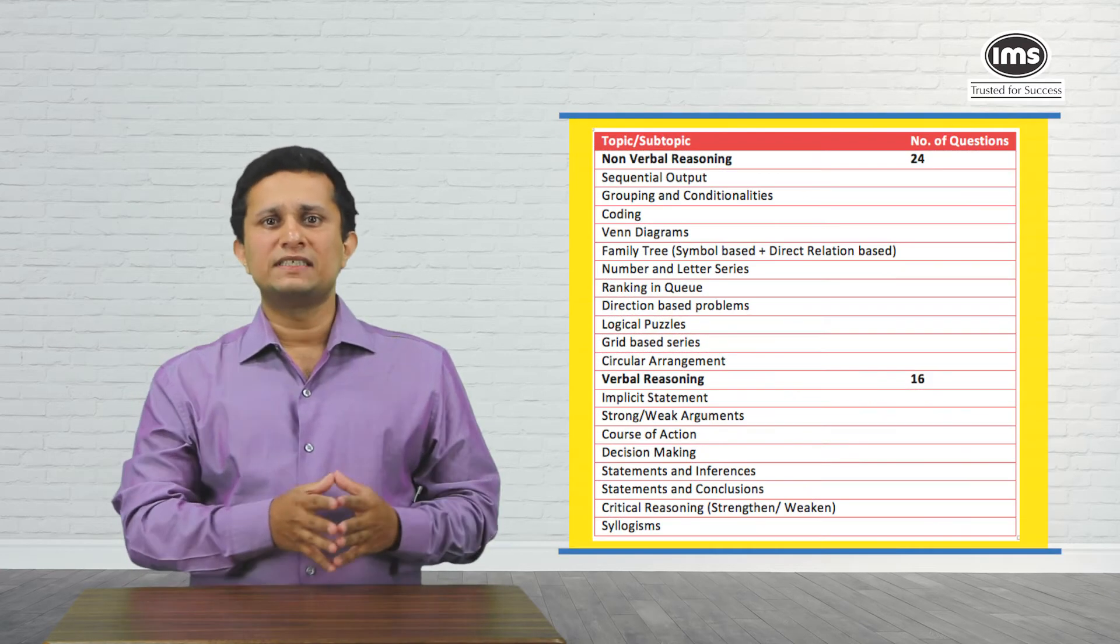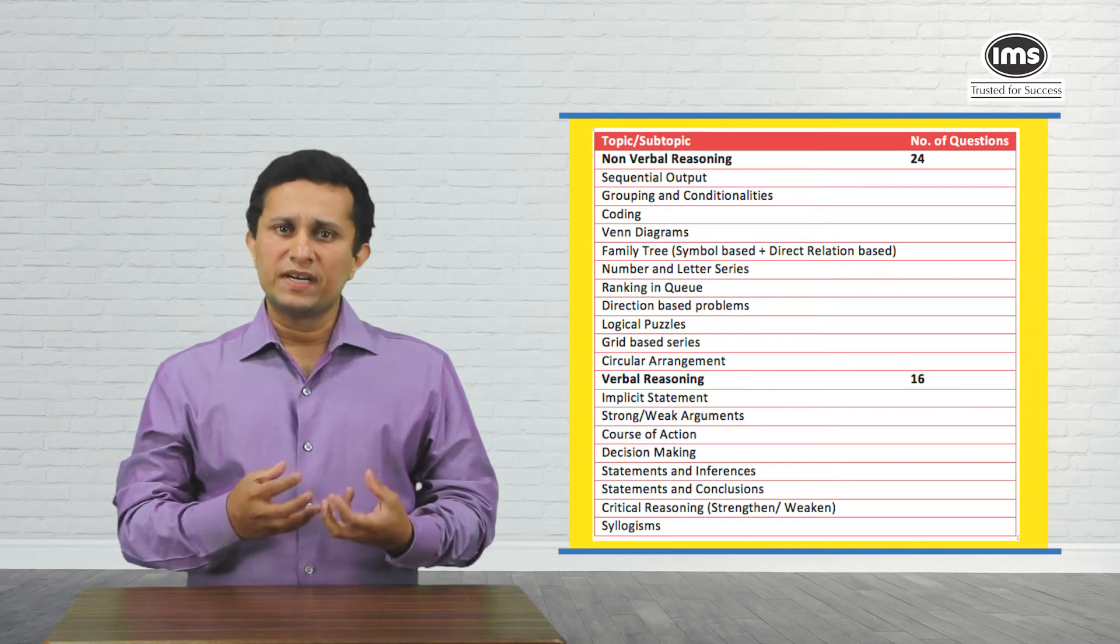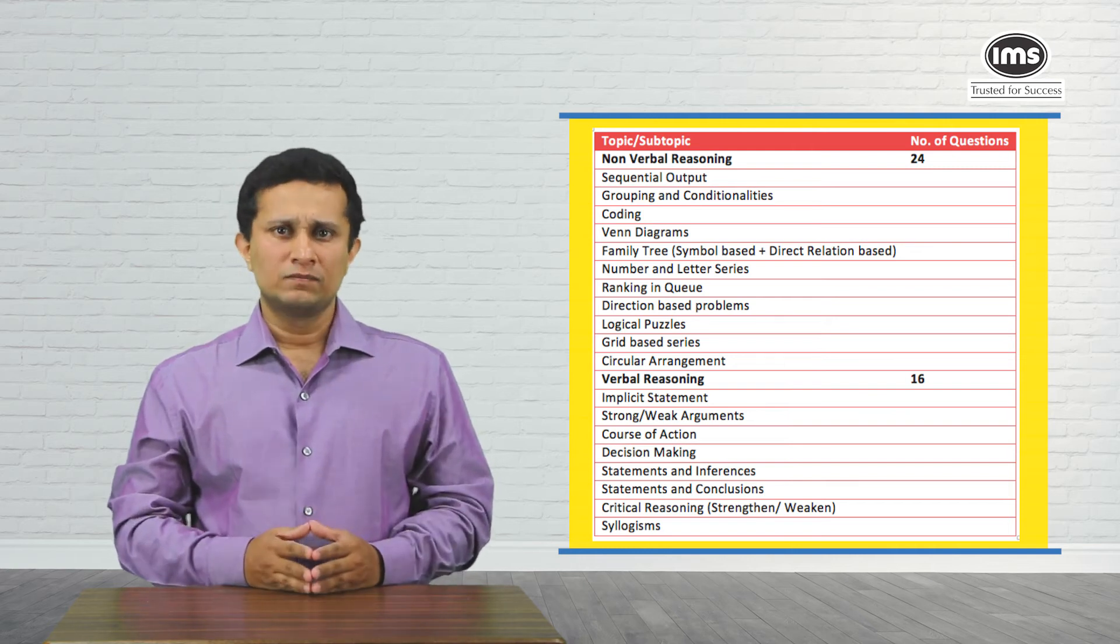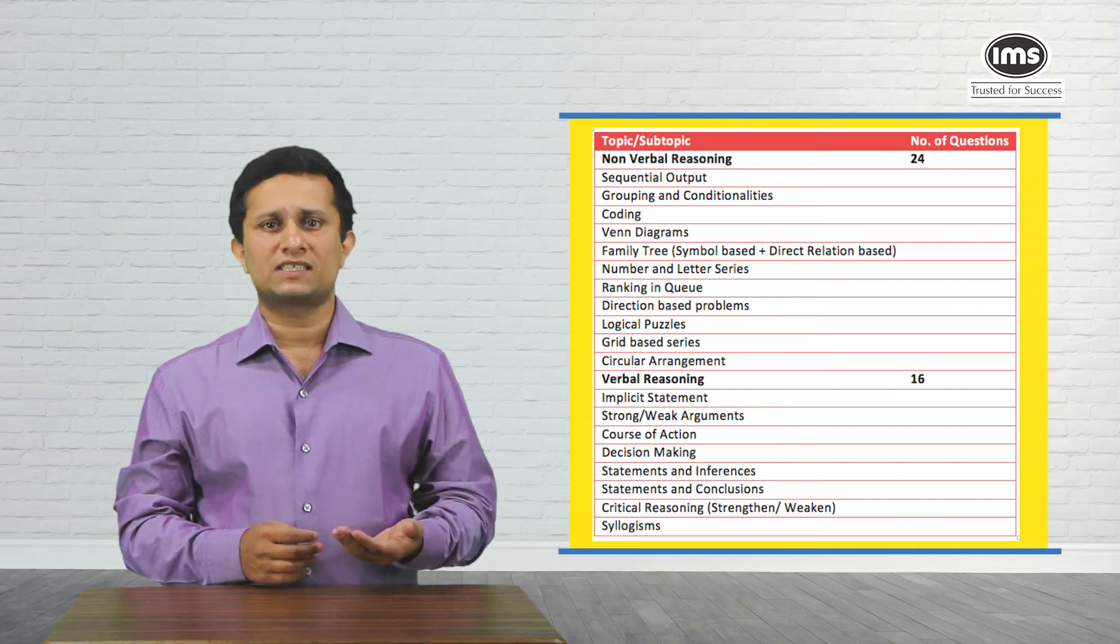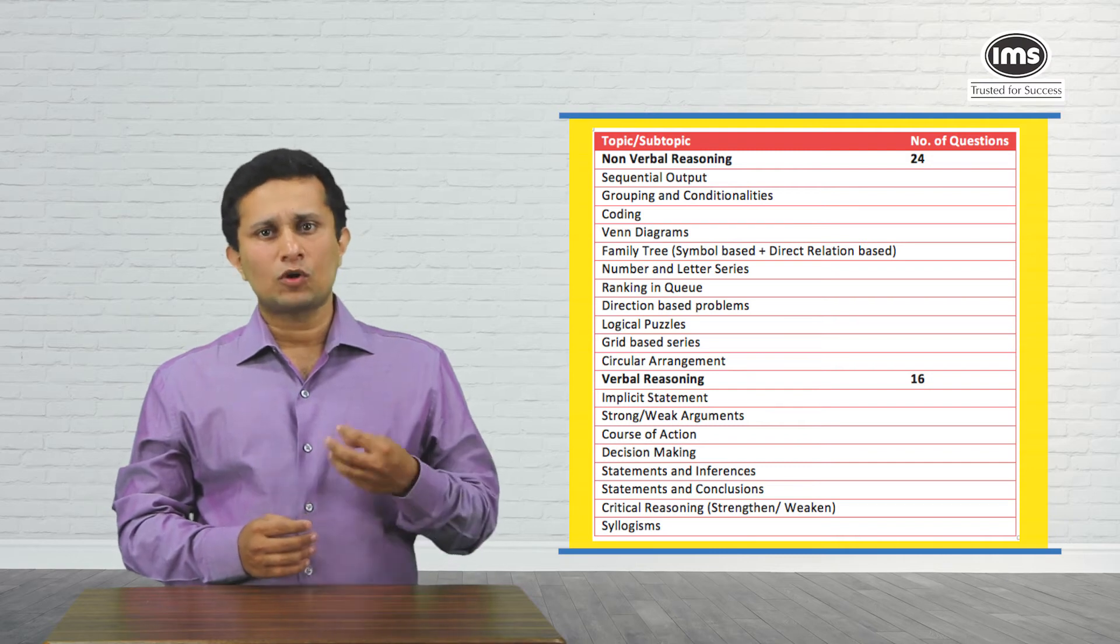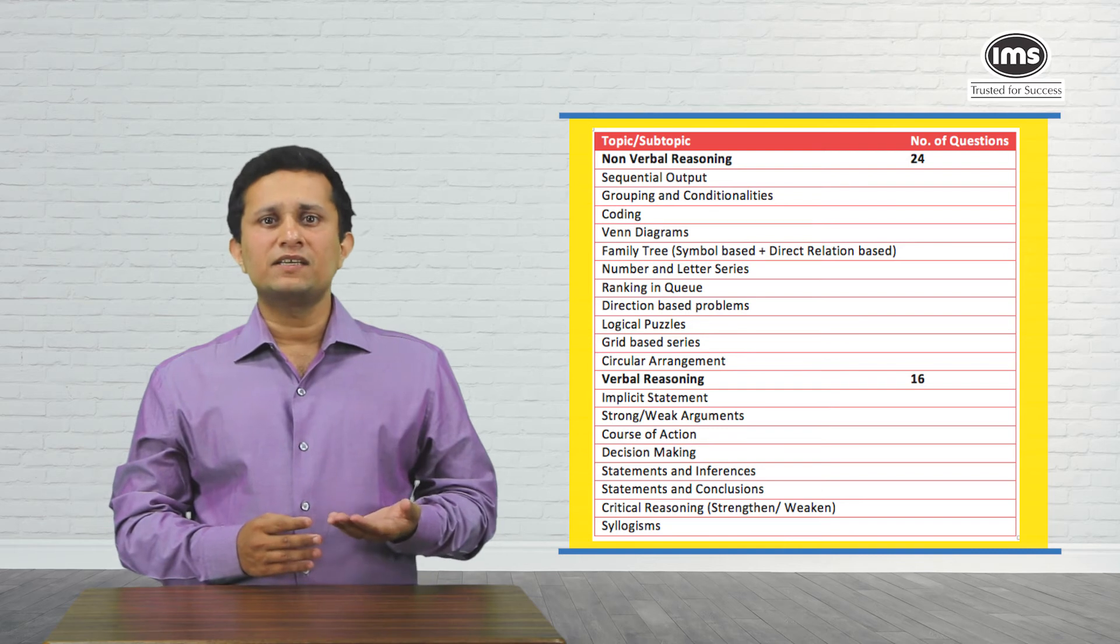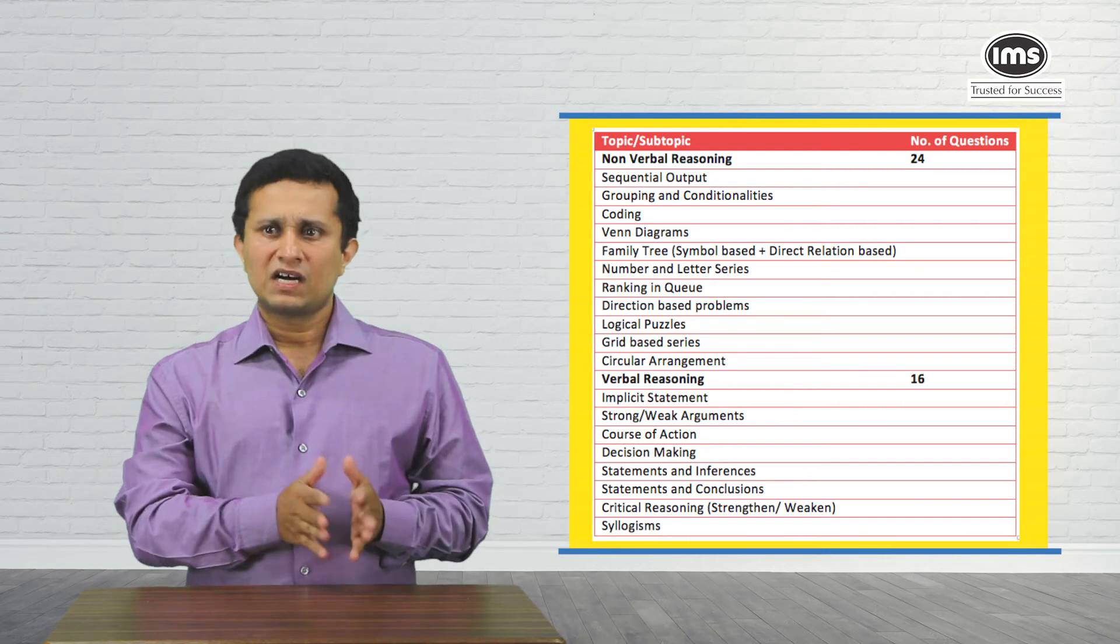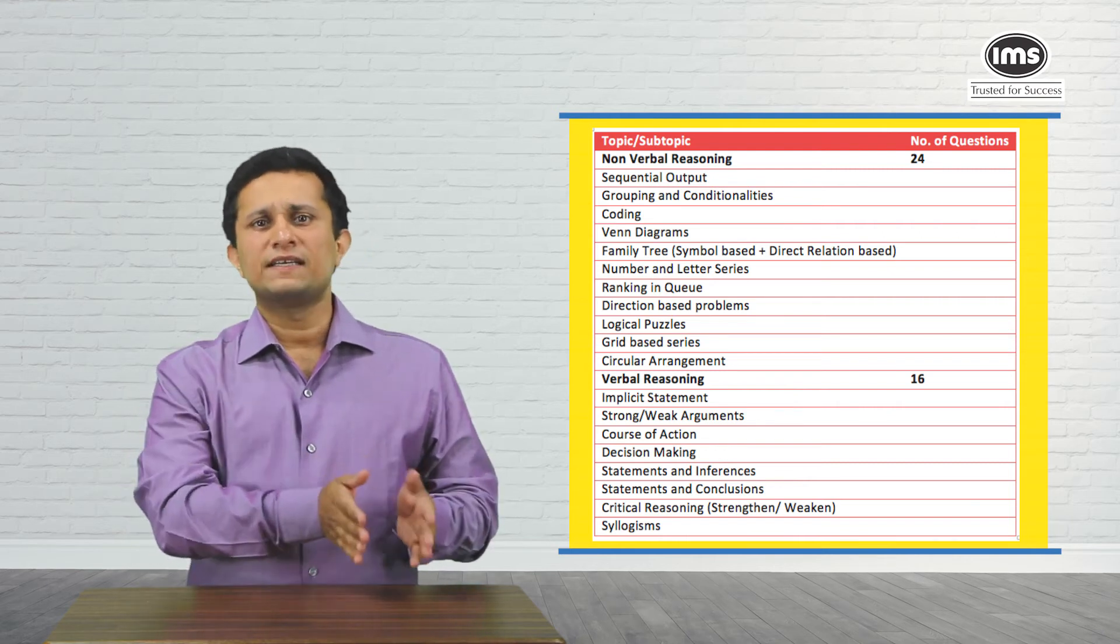Starting with the non-verbal reasoning questions first. This covered a combination of groups and individual questions as is typical for NMAT. A surprise in one of the slots was that there were two sets on sequential output tracing, as also a set on grouping people was very conditional in nature and not typical of the matrix-based set that you would expect in NMAT. However, these were all on the easier side, contrary to earlier NMATs.